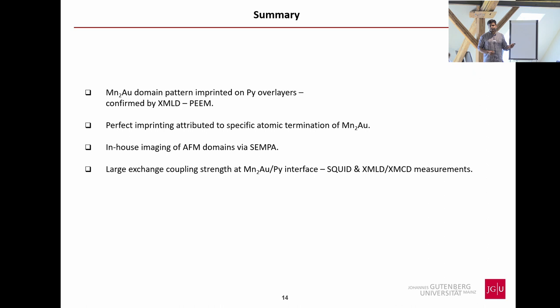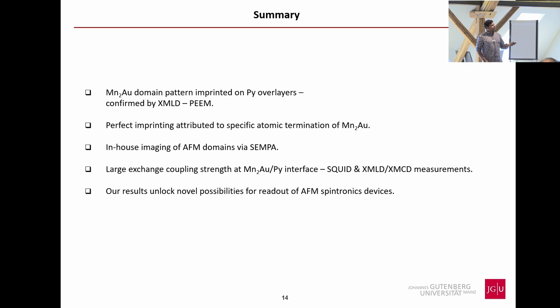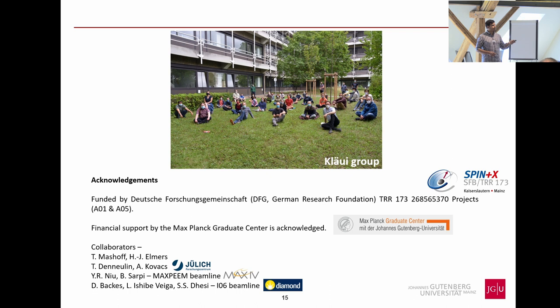In conclusion, we have a super-strong exchange coupling at the Mn₂Au/permalloy interface. The coercive field quantifies the magnetocrystalline anisotropy of the antiferromagnet itself. We observe perfect imprinting of the antiferromagnetic domain pattern onto the ferromagnetic overlayer, enabling in-house antiferromagnet imaging. This is very useful for studying Néel spin-orbit torque-based switching. Furthermore, a ferromagnet strongly coupled to the antiferromagnet — switching simultaneously with it — enables potential readout devices exploiting high magnetoresistance techniques like TMR, addressing a major challenge in antiferromagnetic spintronics.